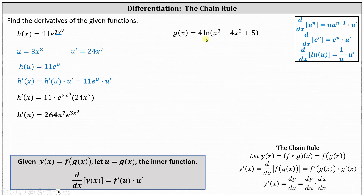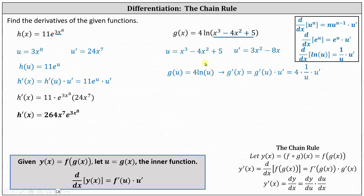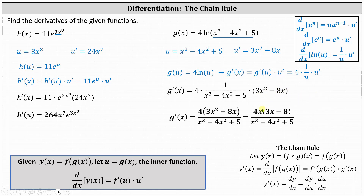For our last example, g of x equals 4 times the natural log of the quantity x cubed minus 4x squared plus 5. The inner function u is the cubic function, so u prime is 3x squared minus 8x. We write g of u equals 4 natural log u, which indicates g prime of x equals g prime of u times u prime, which is 4 times 1 over u times u prime. Substituting, g prime of x equals 4 times 1 over the quantity x cubed minus 4x squared plus 5, times 3x squared minus 8x. Multiplying, g prime of x equals the product of 4 and 3x squared minus 8x, all divided by x cubed minus 4x squared plus 5. We can also factor out the common factor of x from the binomial.